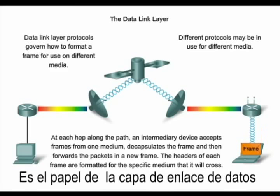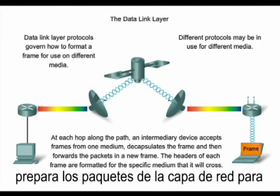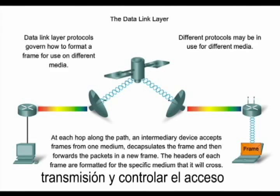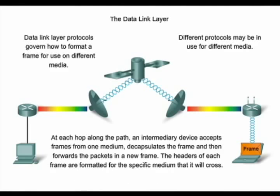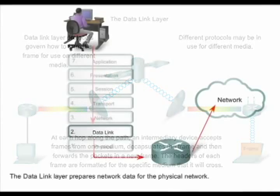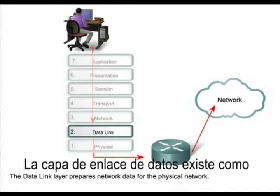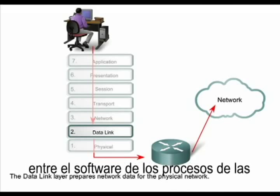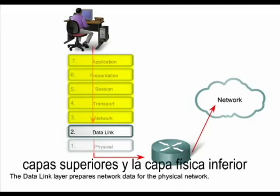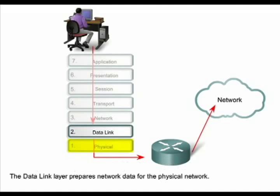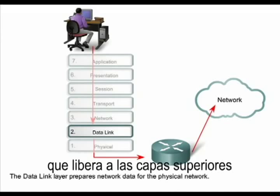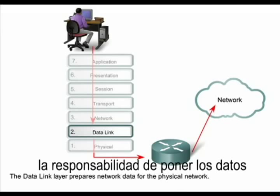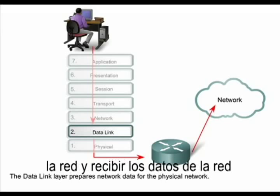It is the role of the data link layer to prepare network layer packets for transmission and to control access to the physical media. The data link layer exists as a connecting layer between the software processes of the layers above it and the physical layer below it. It relieves the upper layers from the responsibility of putting data on the network and receiving data from the network.